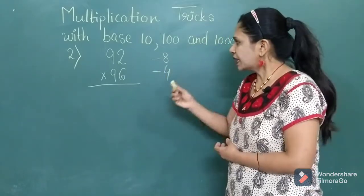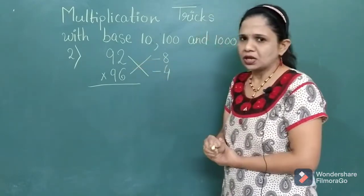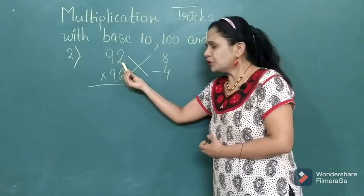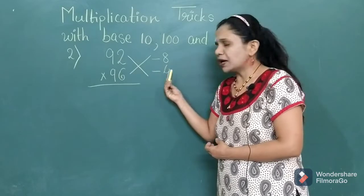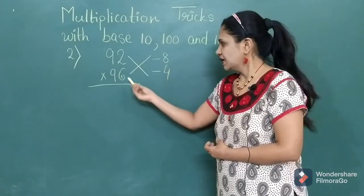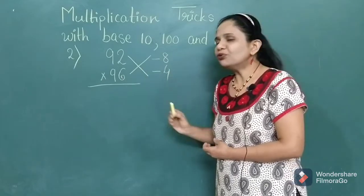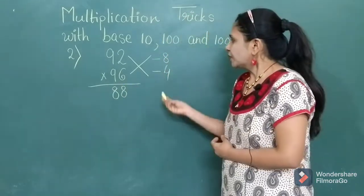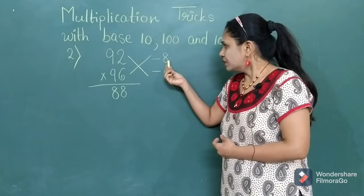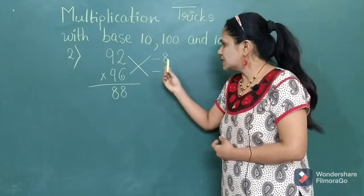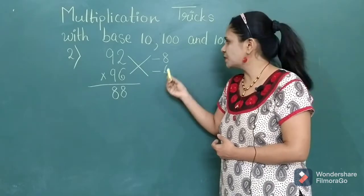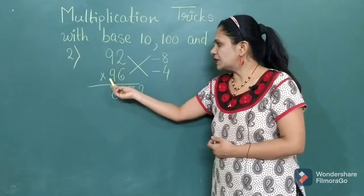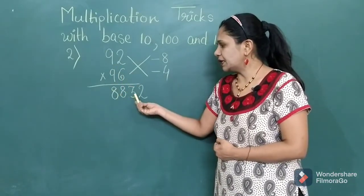This will be your first step. In the second step, draw the cross and do the subtraction of the crisscross numbers. So 92 minus 4, you will get 88. 96 minus 8 — again you get the same answer, 88. So write down 88 first. Then multiply the two numbers you have written: minus 8 into minus 4. Minus times minus gets plus, so 8 fours are 32. Your answer for 92 multiplied by 96 is 8832.